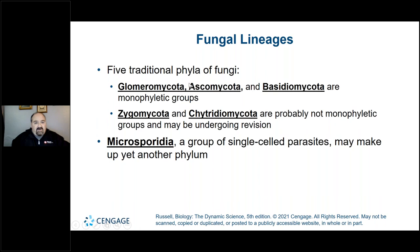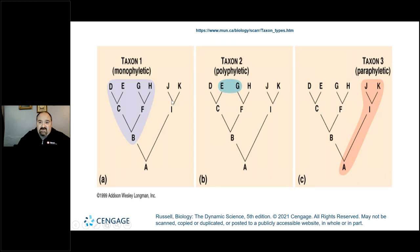Regarding monophyletic, paraphyletic, and polyphyletic groupings: monophyletic refers to all the descendants of a common ancestor. Polyphyletic means coming from different phyla. Paraphyletic means not all descendants are included — it's only a section of the descendants. The zygomycota and chytridiomycota are probably not monophyletic, but glomeromycota, ascomycota, and basidiomycota are monophyletic.